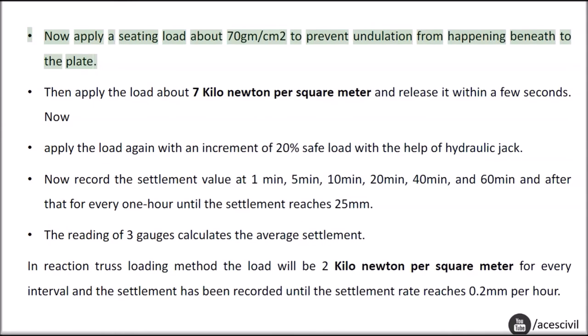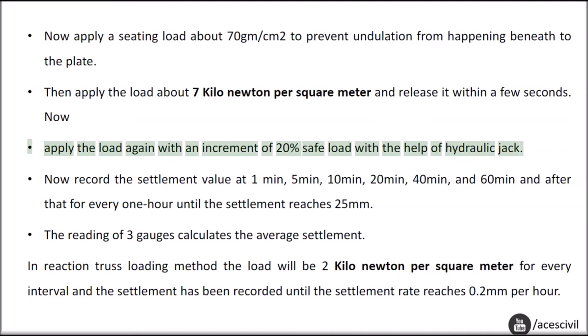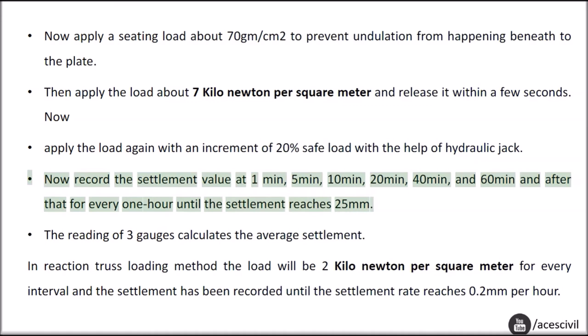Apply a seating load of about 70 gm/cm² to prevent undulation beneath the plate. Then apply a load of about 7 kN/m² and release it within a few seconds. Apply the load again with an increment of 20% of the safe load using the hydraulic jack. Record the settlement values at 1 minute, 5 minutes, 10 minutes, 20 minutes, 40 minutes, and 60 minutes, and after that every 1 hour, until the settlement reaches 25 mm.